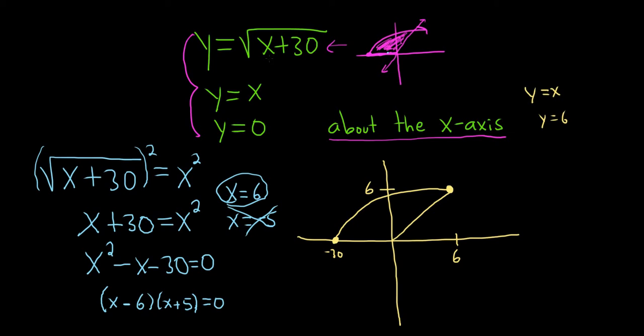Likewise, if you plug it in here, you get 6 plus 30. So you get 36. The square root of 36 is 6. Okay, we're spinning it here. So when we're using the shell method, your rectangles are always parallel to the axis. Remember, shell, parallel. So let's go ahead and draw our rectangle.